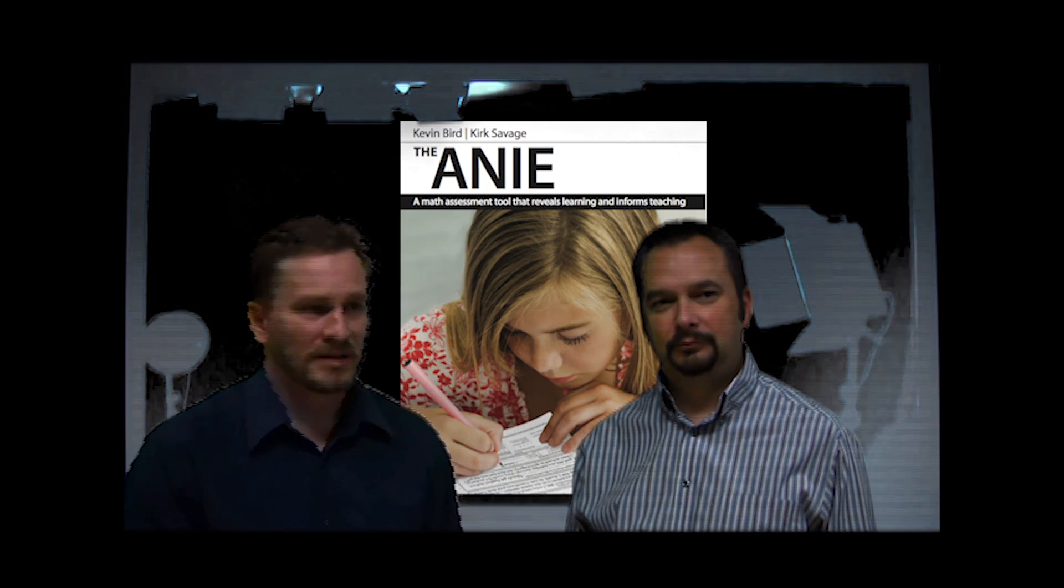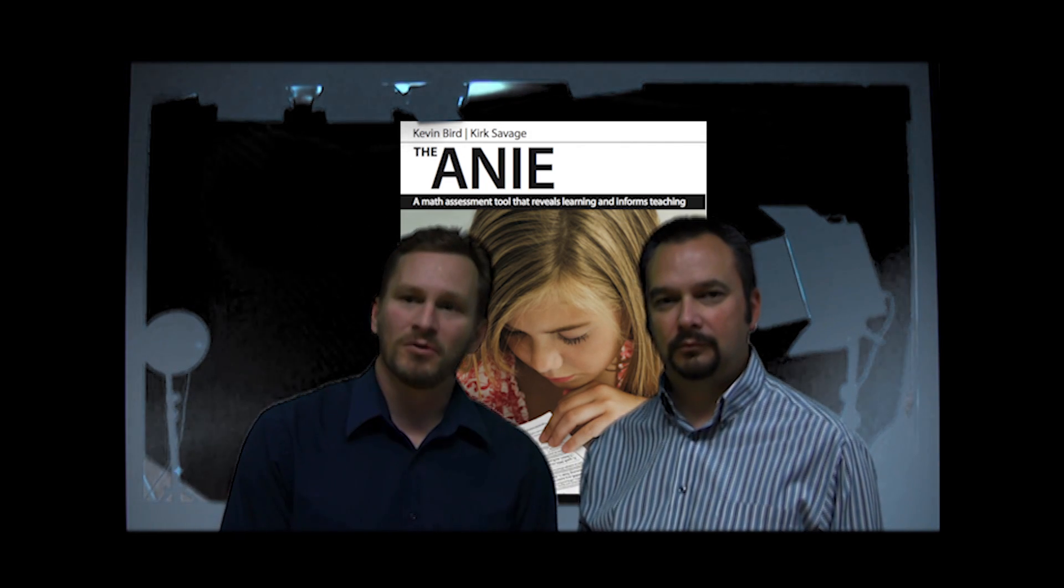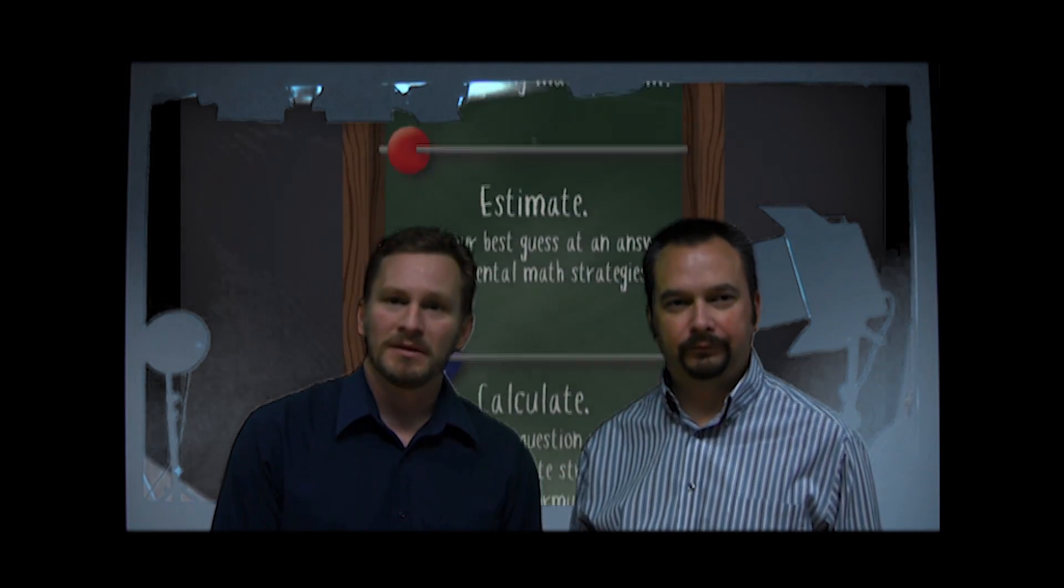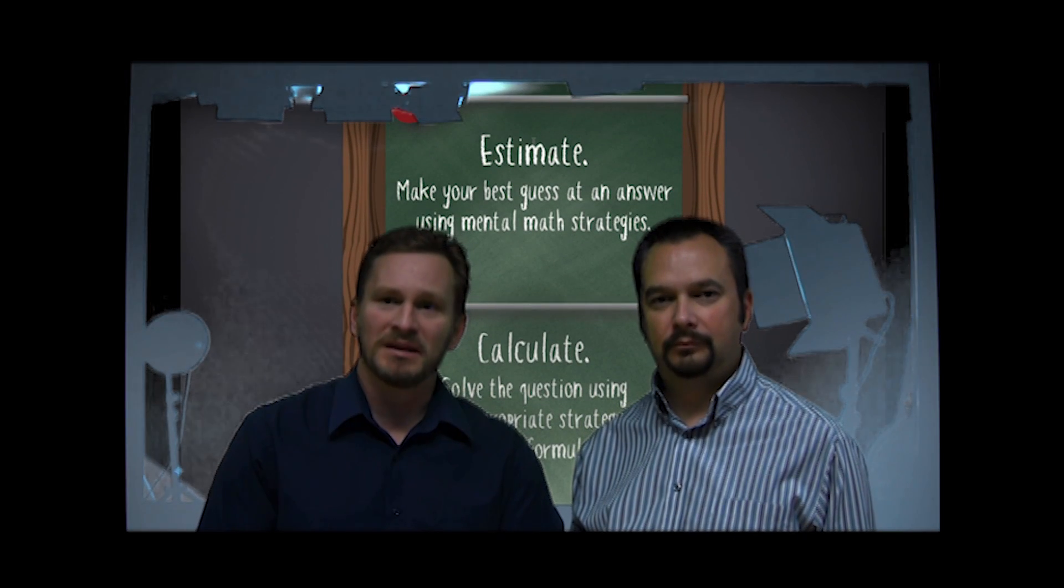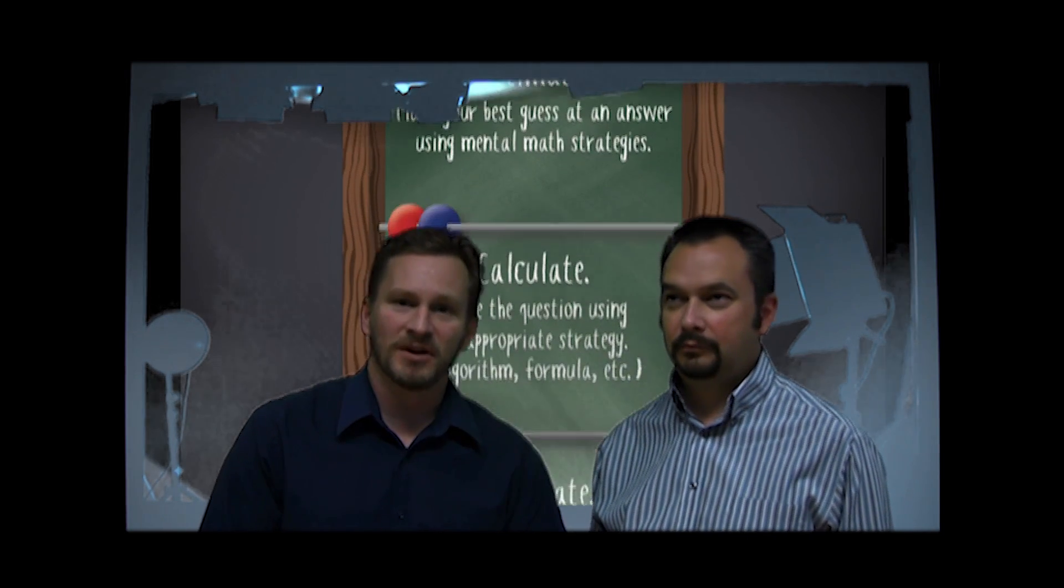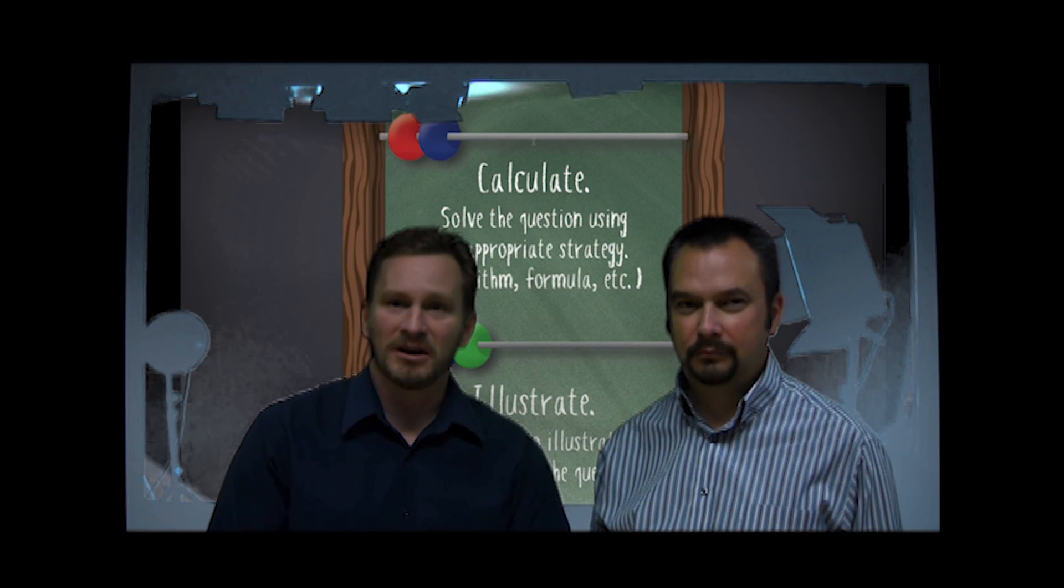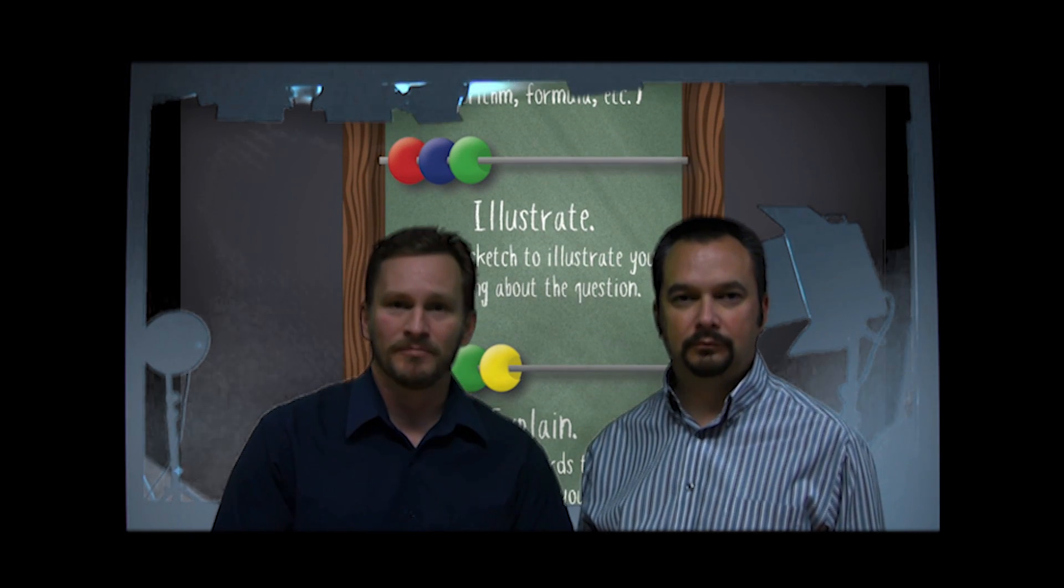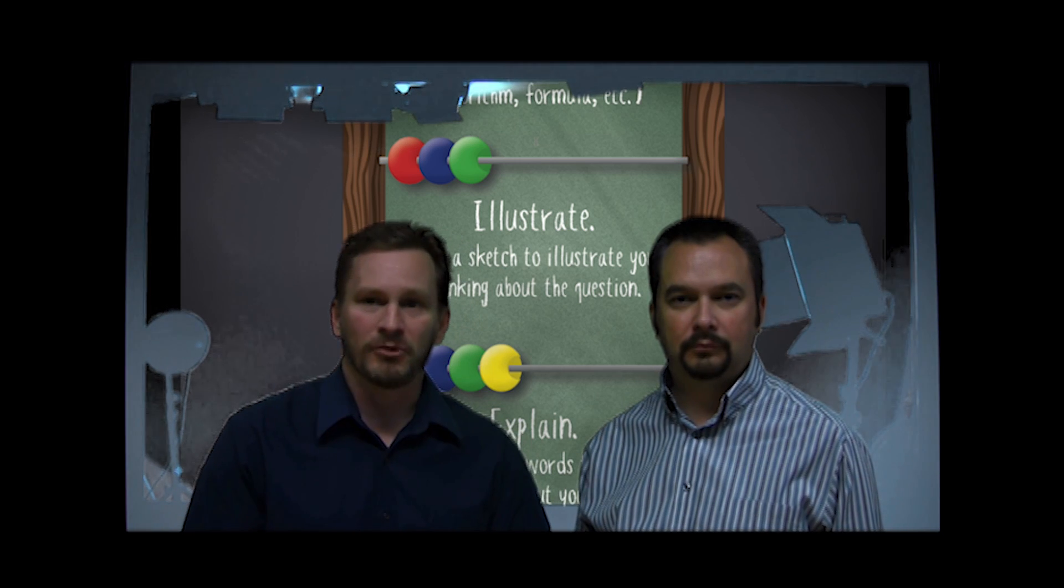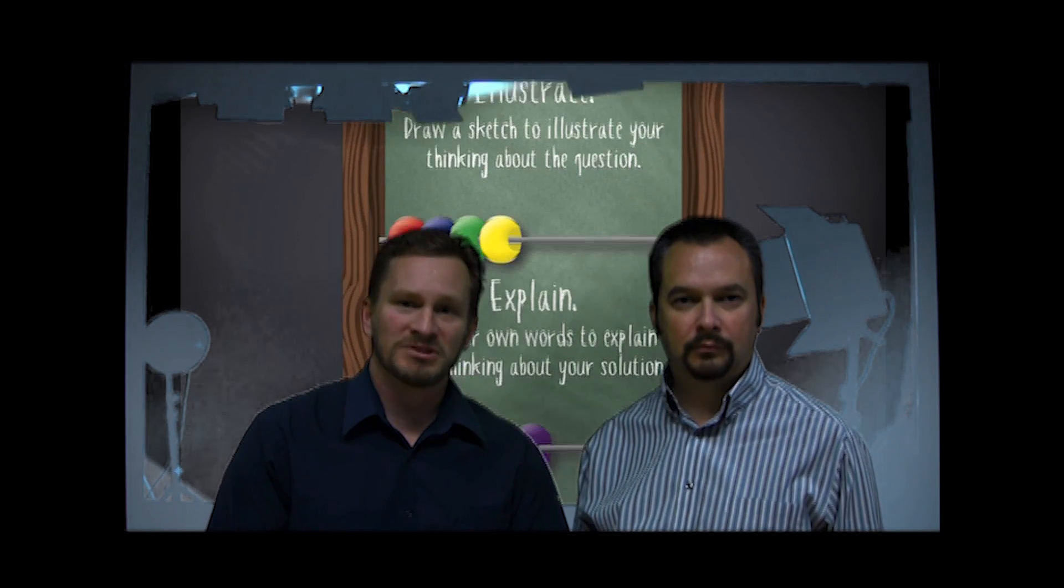The assessment and supporting lesson plans always begin with a goal aligned to a learning outcome. The second step involves the student making an estimation that they must justify. Third, the student must calculate the math using the strategies and approaches that they bring to the table, and follow that by drawing a picture or image representing the math.